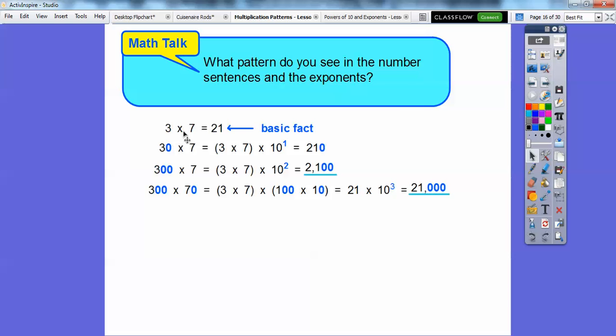The number sentence, like 3 times 7 equals 21, that's a number sentence right there. So what pattern did we see in these number sentences and the exponents? Well, look, this exponent is 1, it has a 1 0. This exponent is 2, it has two 0s. So after we multiply these numbers here, 3 times 7...